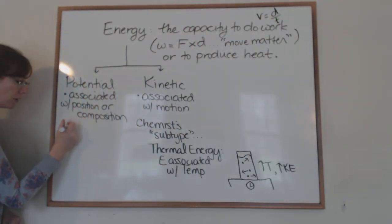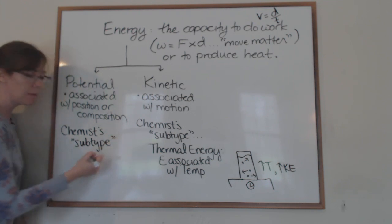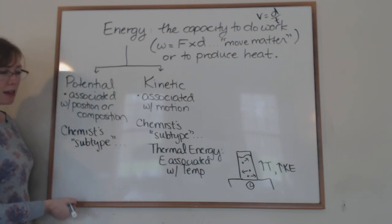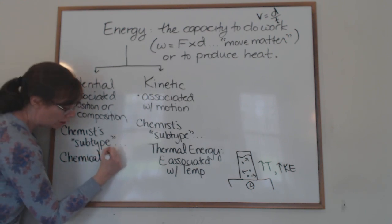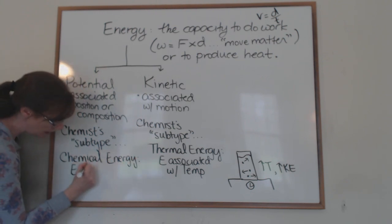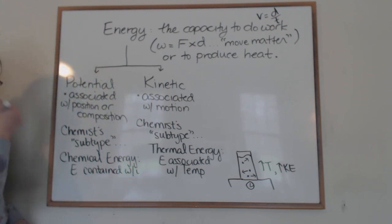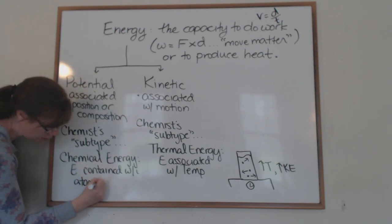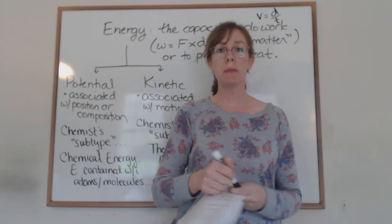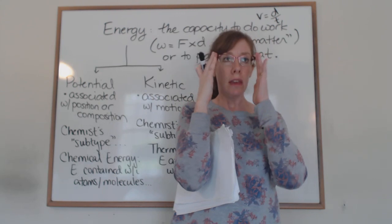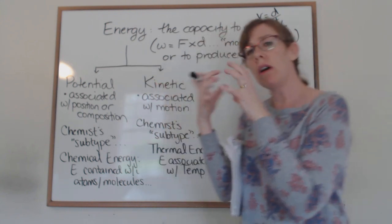In terms of potential energy, the chemist's subtype is called chemical energy. It's the energy contained within atoms and molecules — the energy of interactions between electrons and nuclei, the energy within chemical bonds, the energy of attraction between cations and anions. It's the energy within a substance.